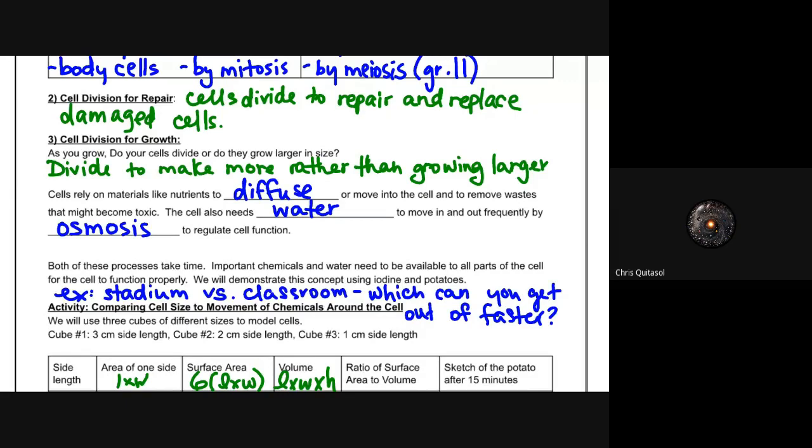The reason why they rely on dividing instead of growing is because materials like nutrients and water and all that type of stuff diffuse or move across the cell wall and cell membranes to remove waste and bring in nutrients into the cell. It does so by this process of osmosis, and these processes take time. It's important for these chemicals and water to get into and out of these cells in a timely manner.